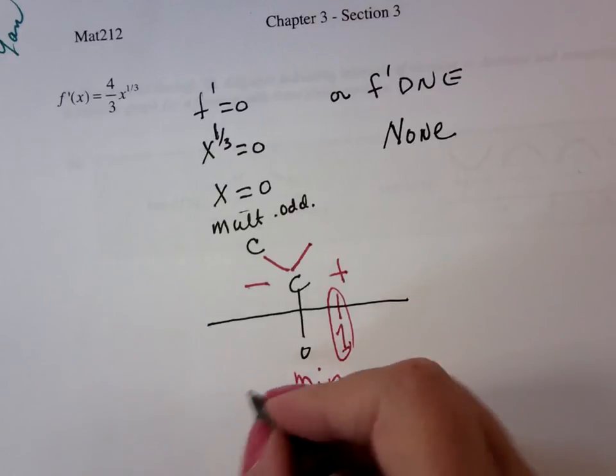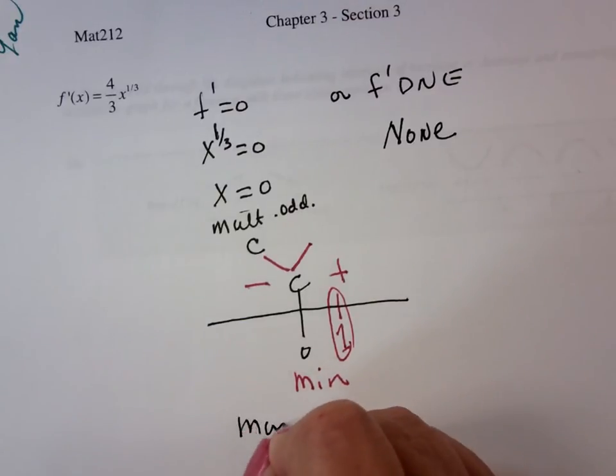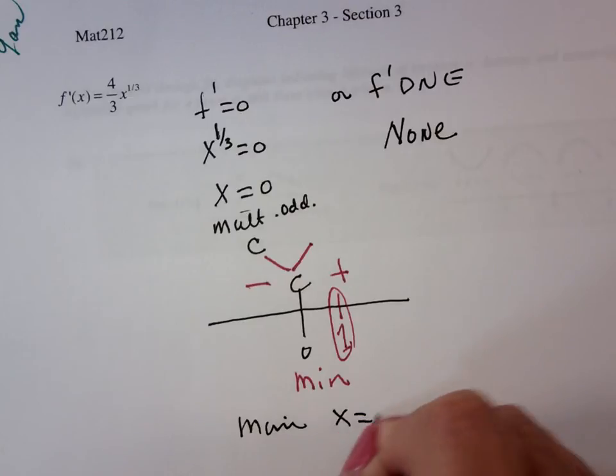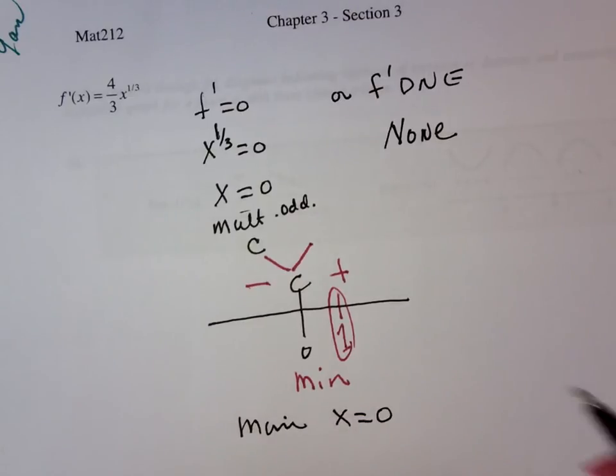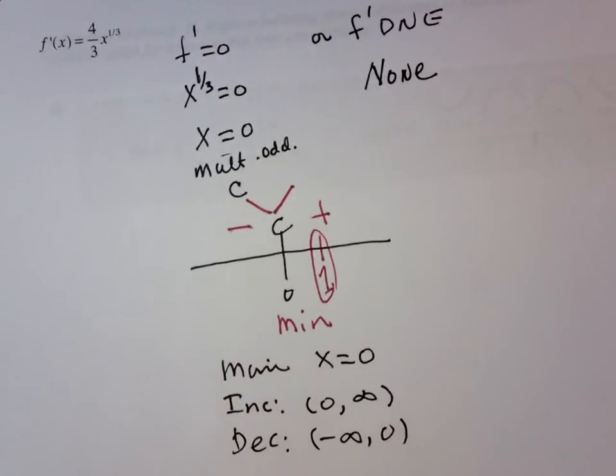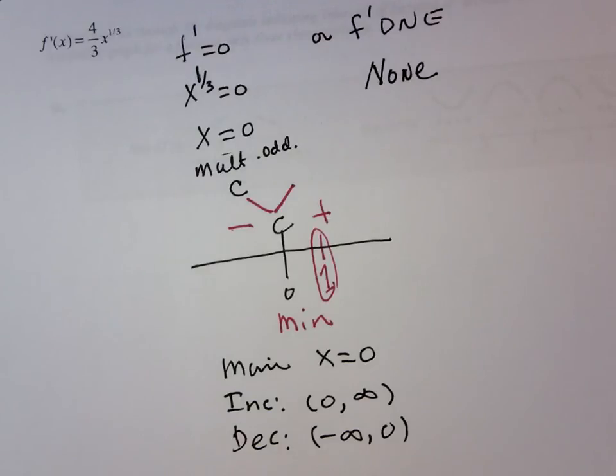So that says that we have a min at x equals zero, and that it's increasing from zero to infinity and decreasing from minus infinity to zero, which is how a minimum behaves.